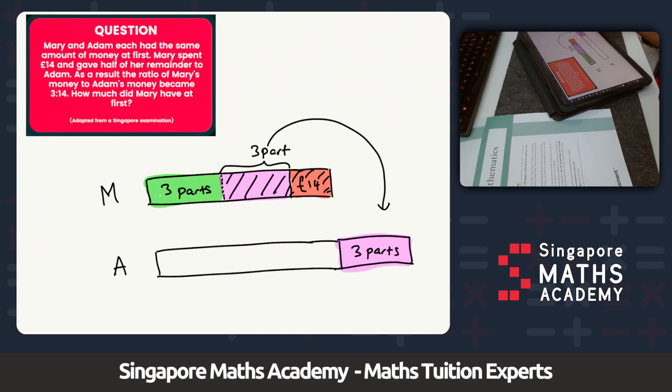Because they had the same amount of money, this means that if I split this initial bar, which is up to here, in the same way, then I can say that this is three parts above, exactly the same. This is also three parts above, exactly the same. And this is the £14 above, exactly the same. And then Adam received three extra parts as well.